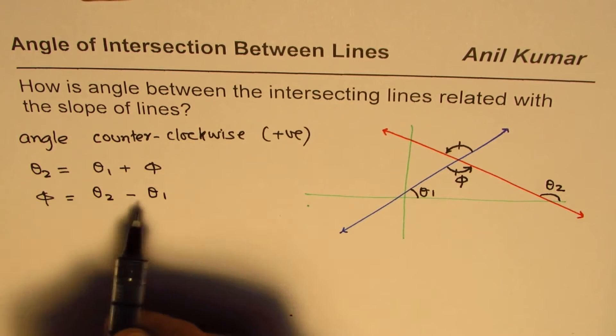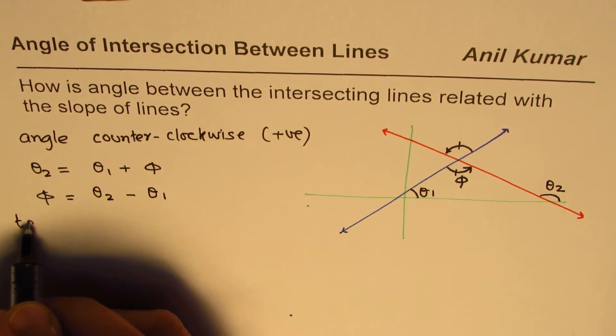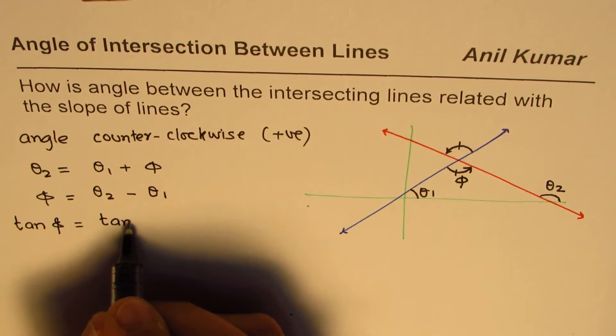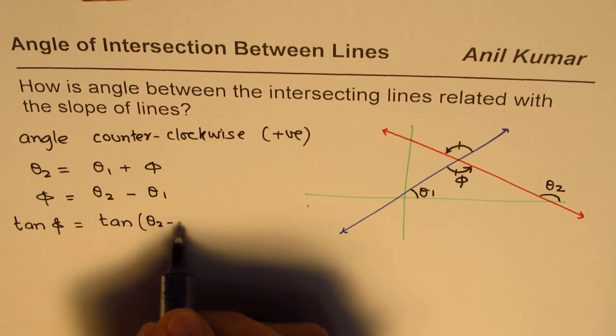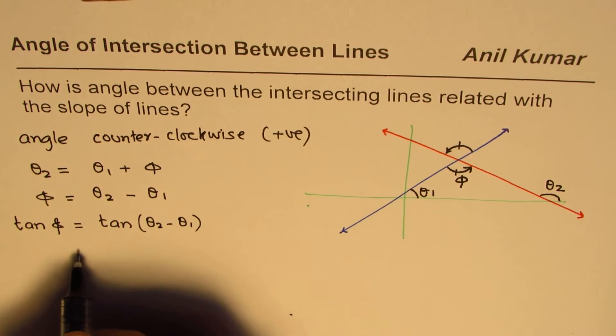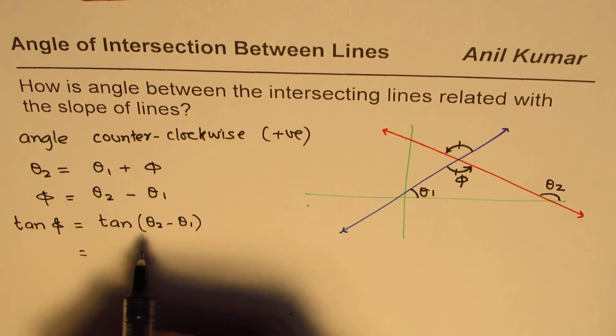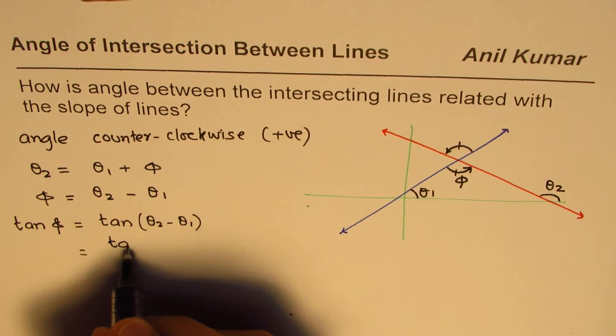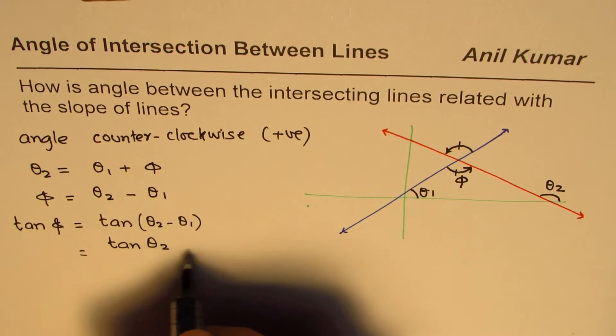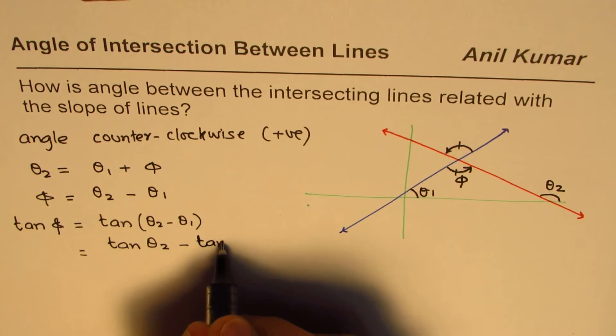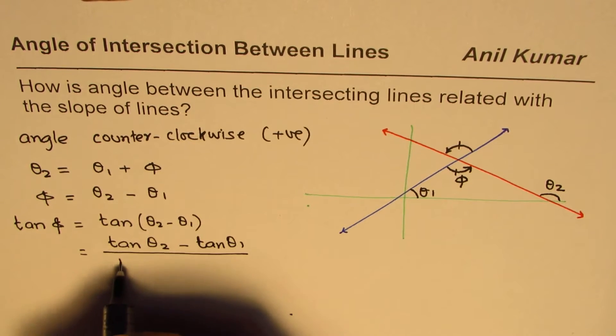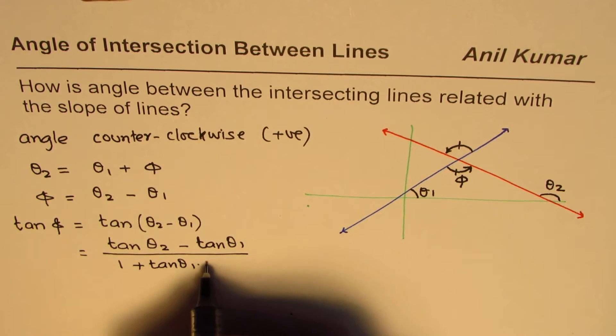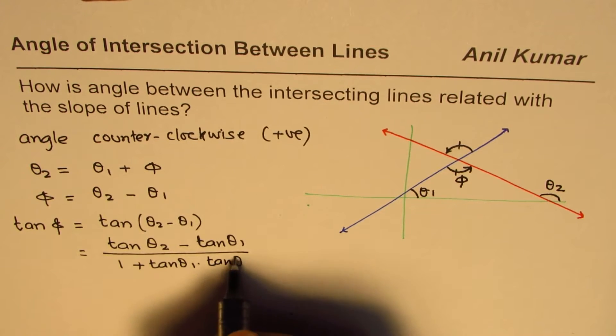Now if I take tan on both sides I could write this as tan of the angle equals tan of theta 2 minus theta 1. Now you know this formula, tan of the angle difference will be tan of theta 2 minus tan of theta 1 divided by 1 plus tan theta 1 times tan theta 2.